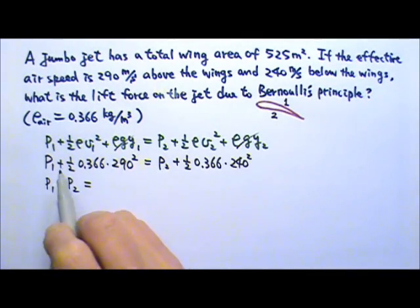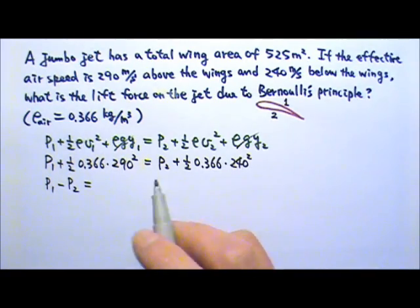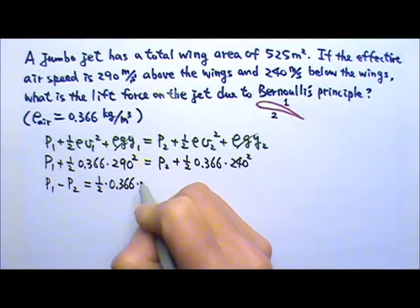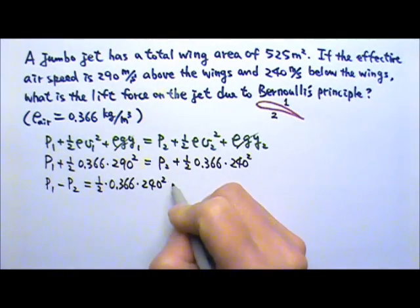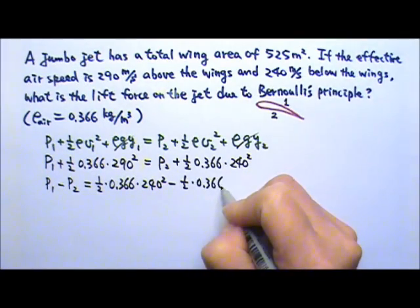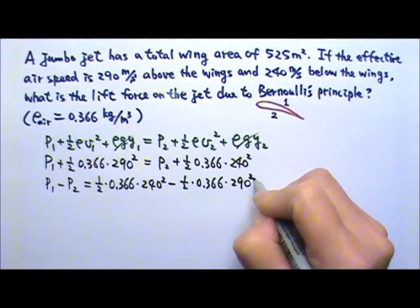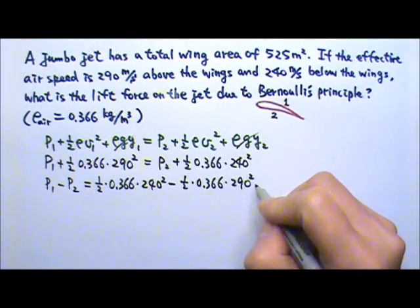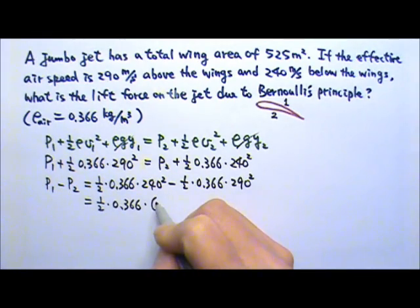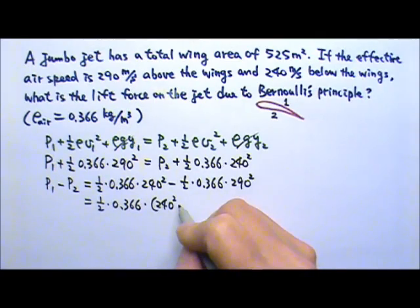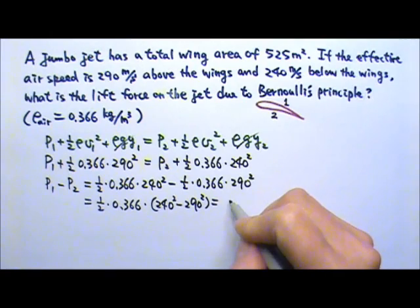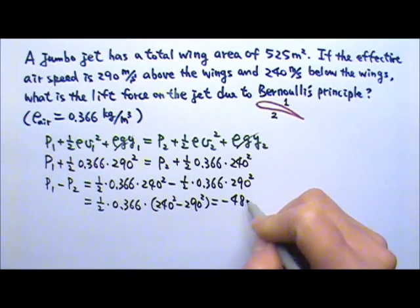I just have to move P2 to this side and move this term to the other side. So I will have 1 half times 0.366 times 240 squared minus 1 half times 0.366 times 290 squared. And I can factor out the one half times 0.366, and I can do the calculation of 240 squared minus 290 squared. And this will give me negative 4850.